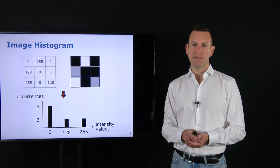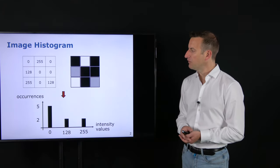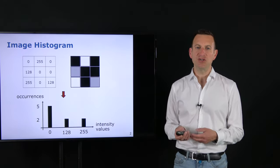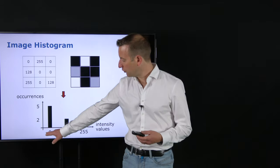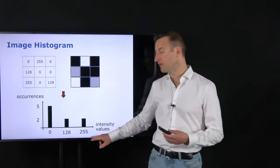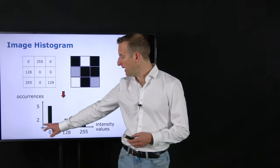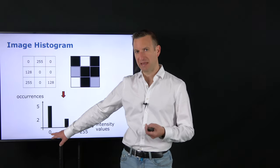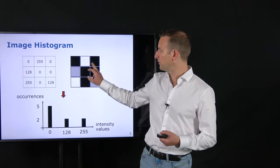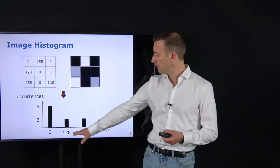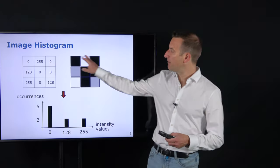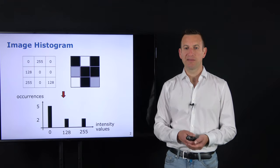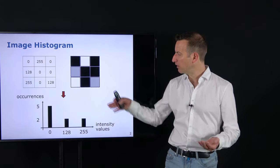Let's briefly repeat what an image histogram is. An image histogram is a distribution that tells me how often individual intensity values occur. On the x-axis we have the possible intensity values from 0 to 255, and on the y-axis we have the counts. For example, a pixel with intensity value 0 — a black pixel — that occurs 5 times corresponds to 5 black pixels in the image. The same holds for grey and white pixels.